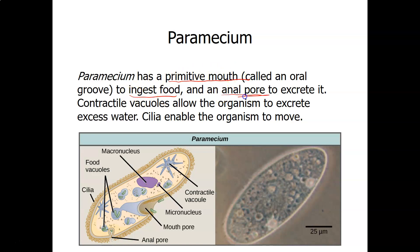The paramecium has a mouth for ingesting food and an anal pore for excreting waste. It's worth noting that some animals have only one opening for both food and waste, so having a separate mouth and anus makes the paramecium more complex than many other protozoans and even some animals.